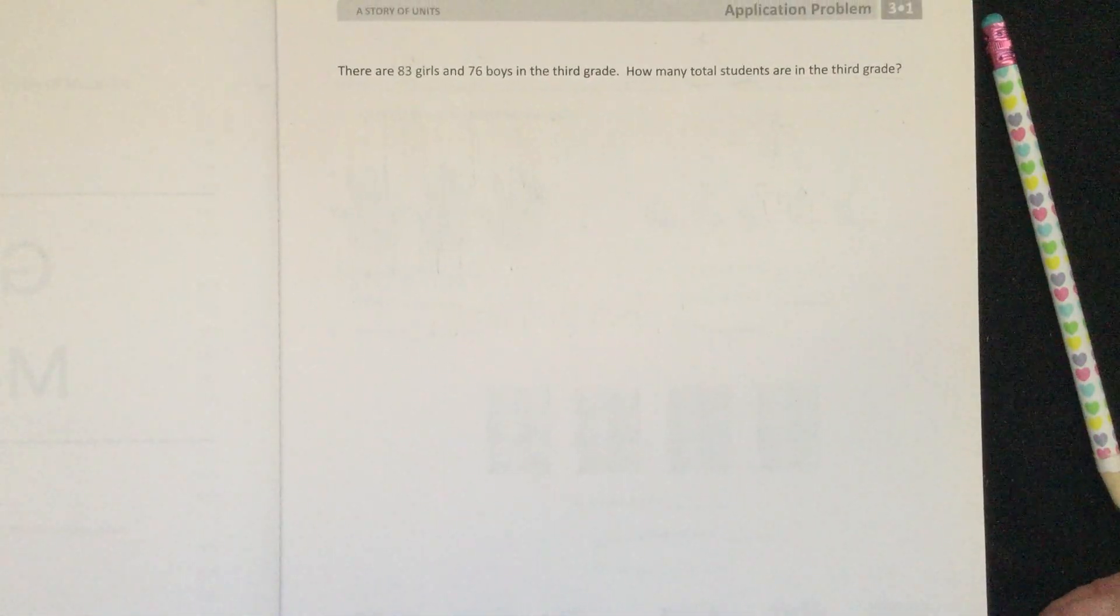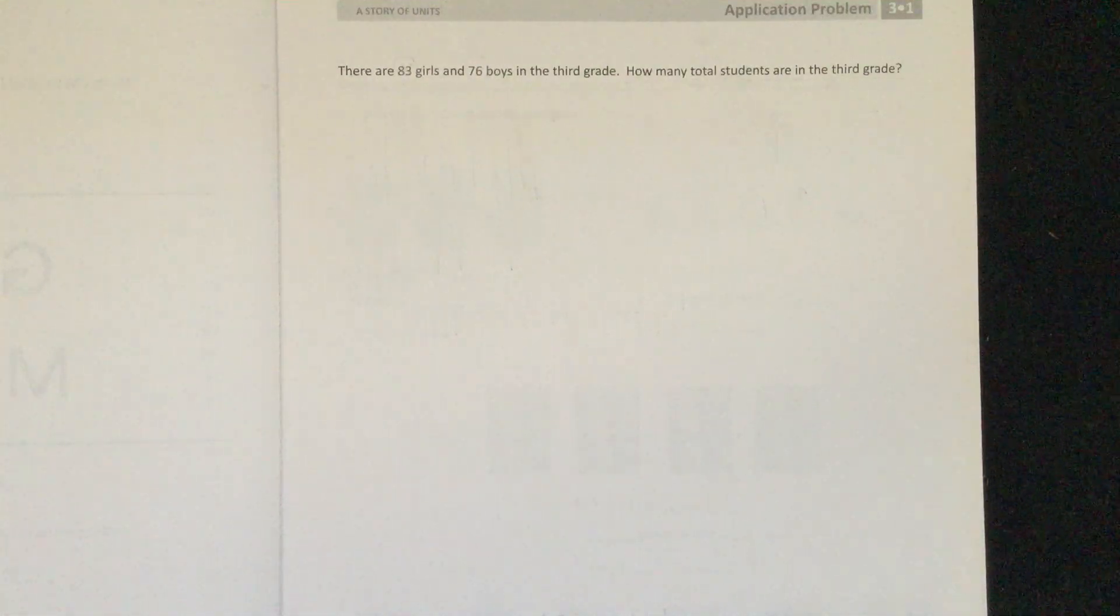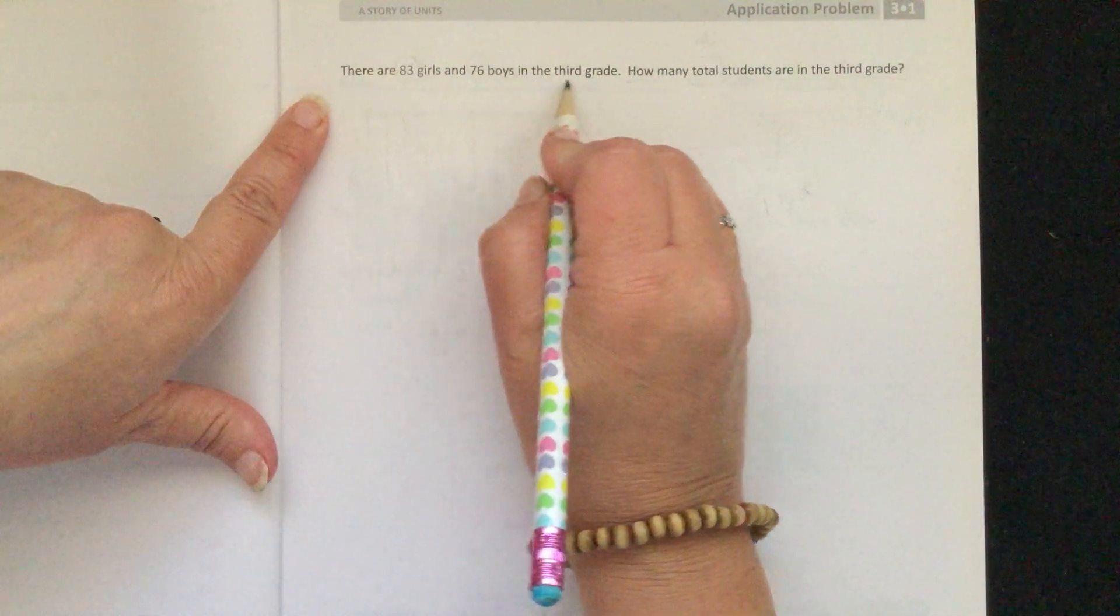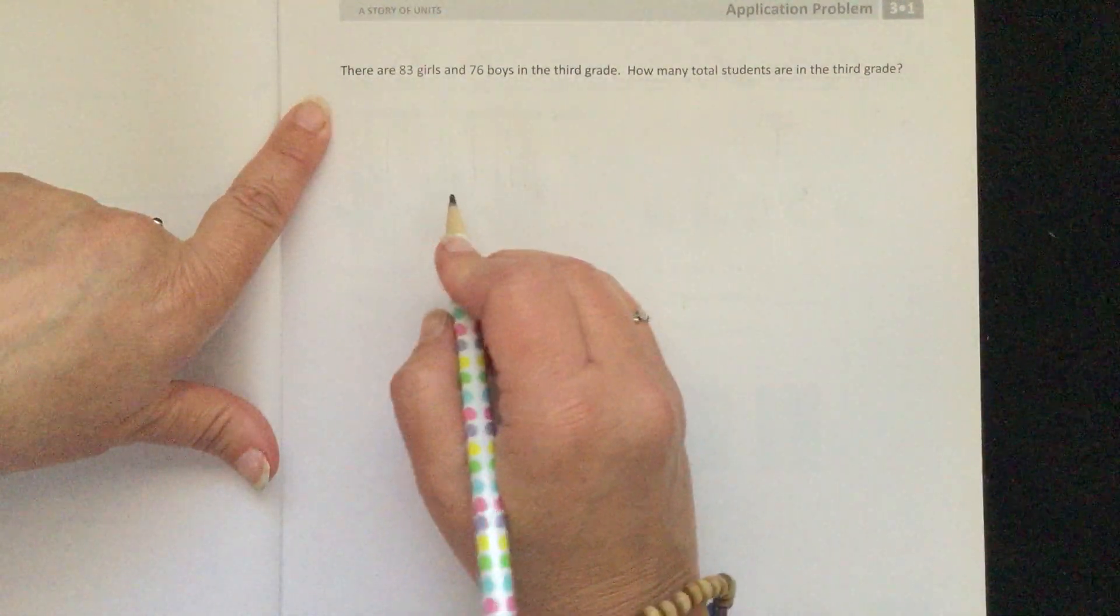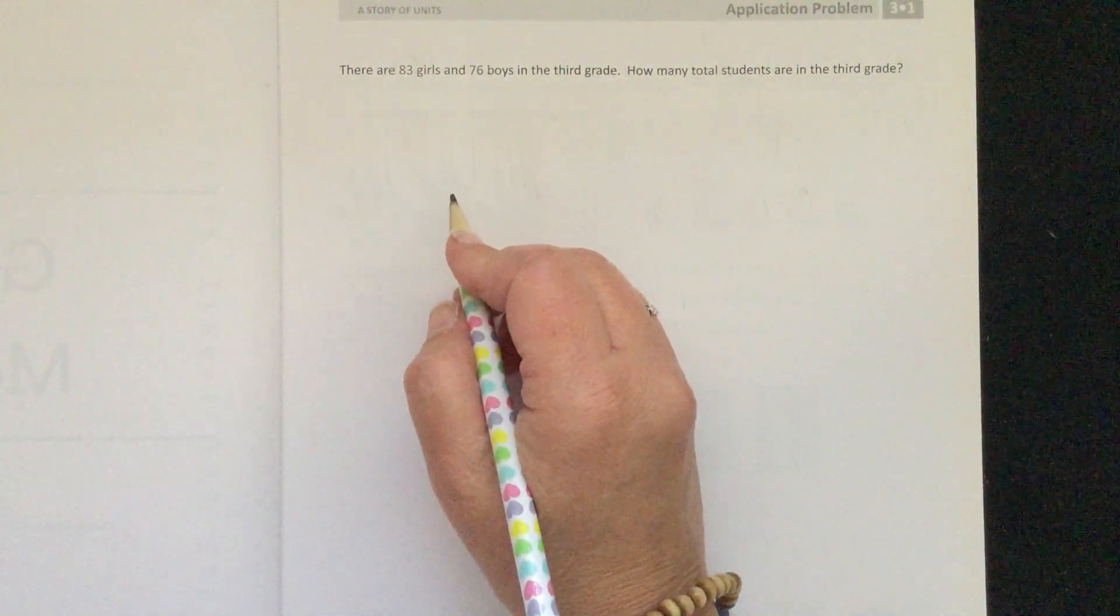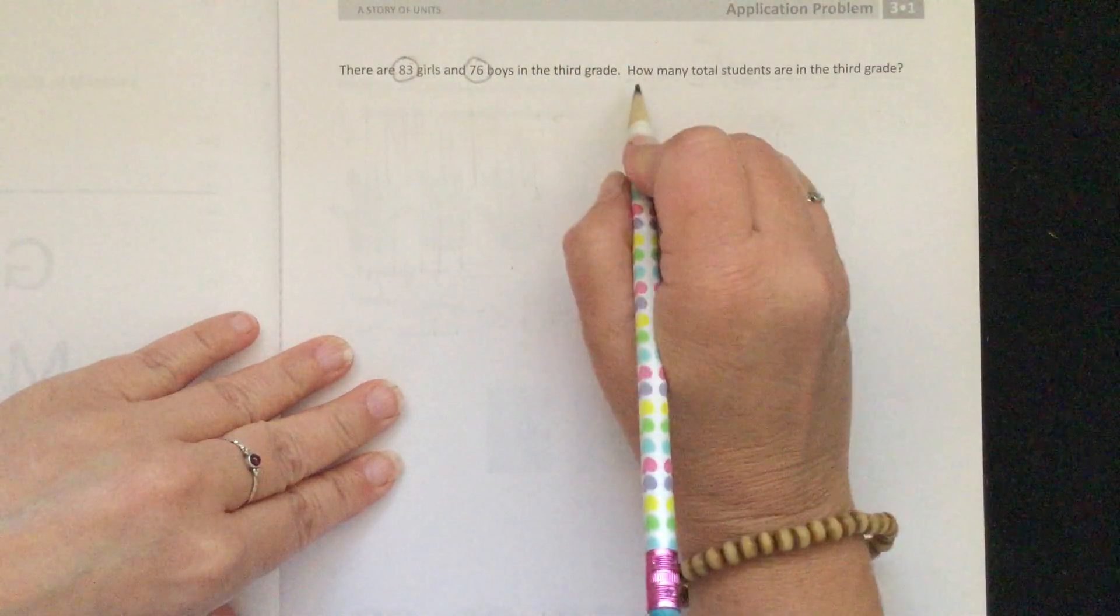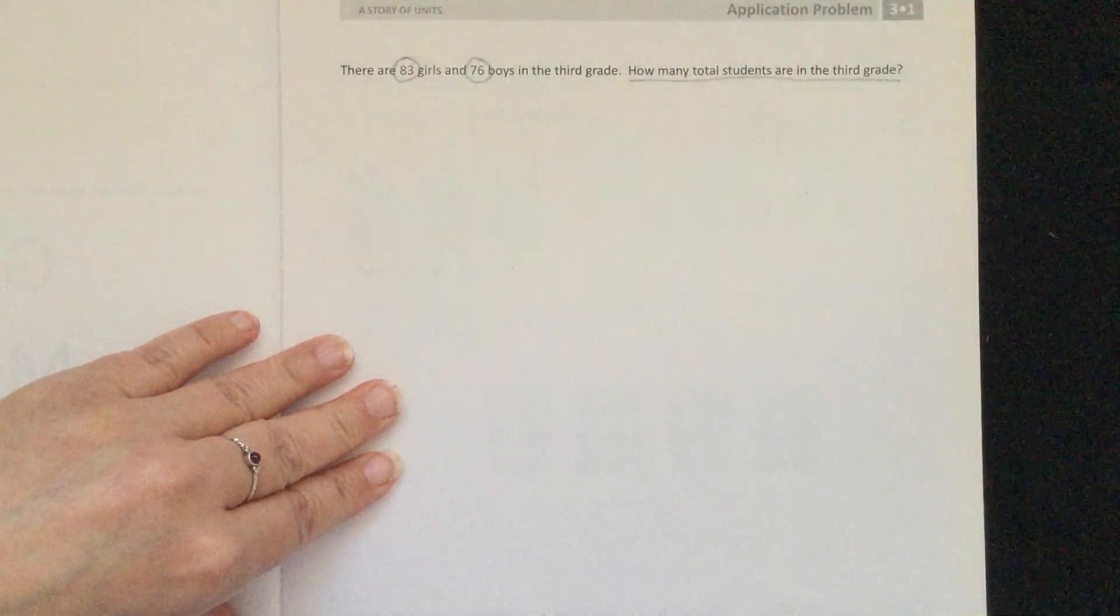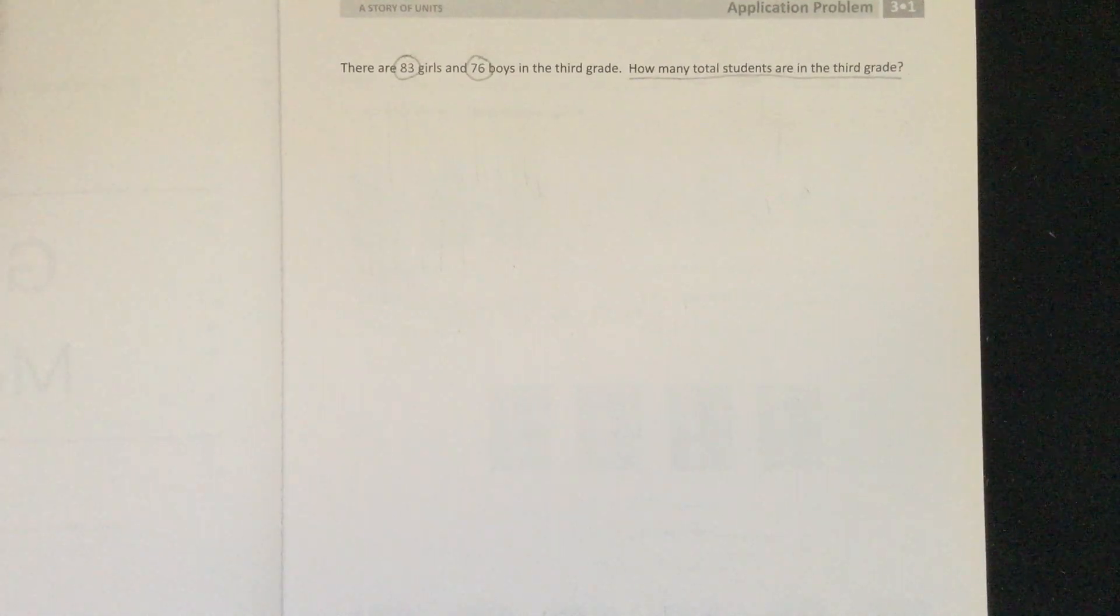We're going to start with our application problem using the redraw, write, write method. There are 83 girls and 76 boys in the third grade. How many total students are in the third grade? We need to circle our key information: 83, 76. Our question is how many total students are in the third grade, so I'm underlining that to make sure we answer that question before we are finished with this problem.